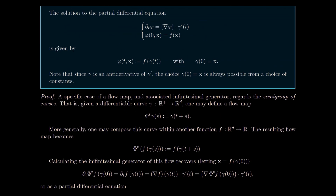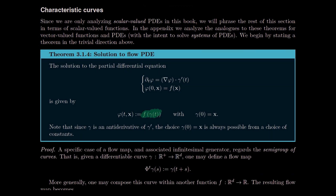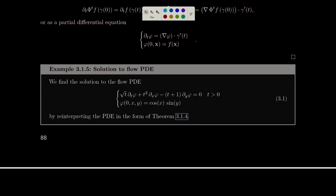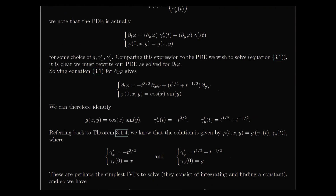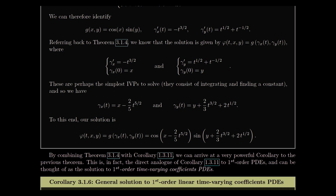Once we have gamma, the theorem says the solution is just the initial condition of the PDE evaluated at the curve gamma. I go back to the PDE, find the initial condition, plug gamma_x in for x and gamma_y in for y. In the example this gives cosine(gamma_x) times sine(gamma_y), and that's the solution to the PDE.